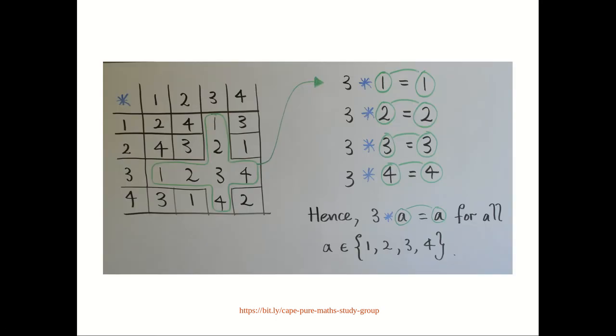So, from the multiplication table, if you notice the column 3 and row 3, we would get a set of 4 equalities, and it clearly shows that 3 star a is equal to a for all a in the set.